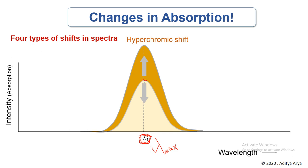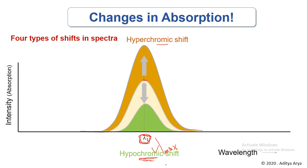Similarly, another kind of change is a decrease in intensity. As you can see, the intensity decreases but the lambda max remains the same. This kind of shift — a decrease in the intensity of light absorbed — is known as a hypochromic shift. So we should remember: hyperchromic means increase in intensity without changing lambda max; hypochromic shift means decrease in intensity without changing lambda max. In both situations, lambda max does not change.